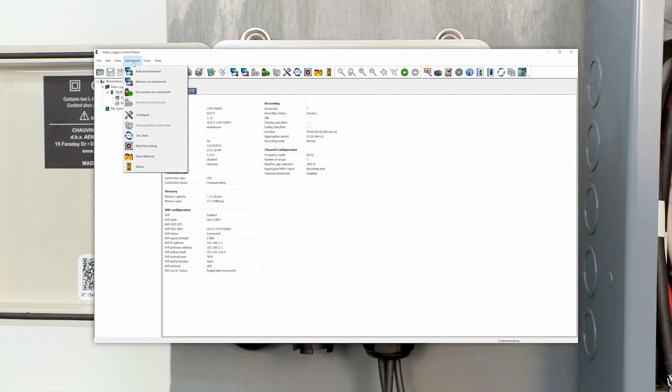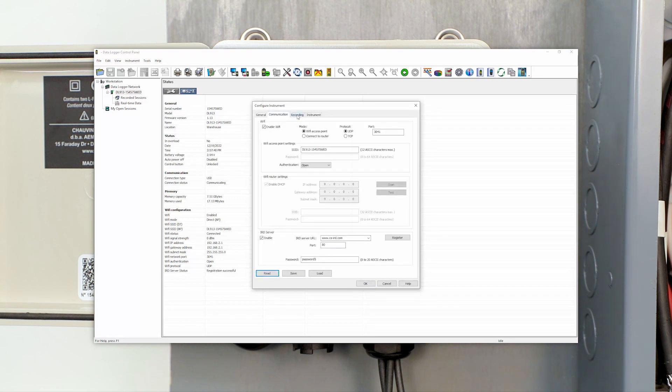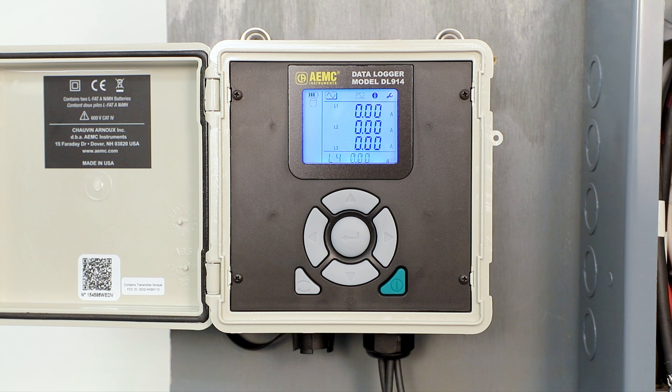The data logger control panel allows the user to view recorded data, view the instrument status, and configure the instrument more in depth.